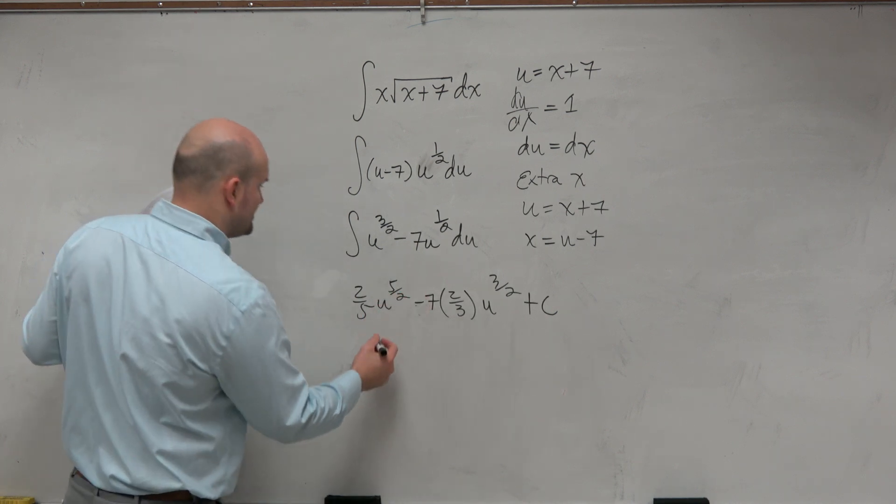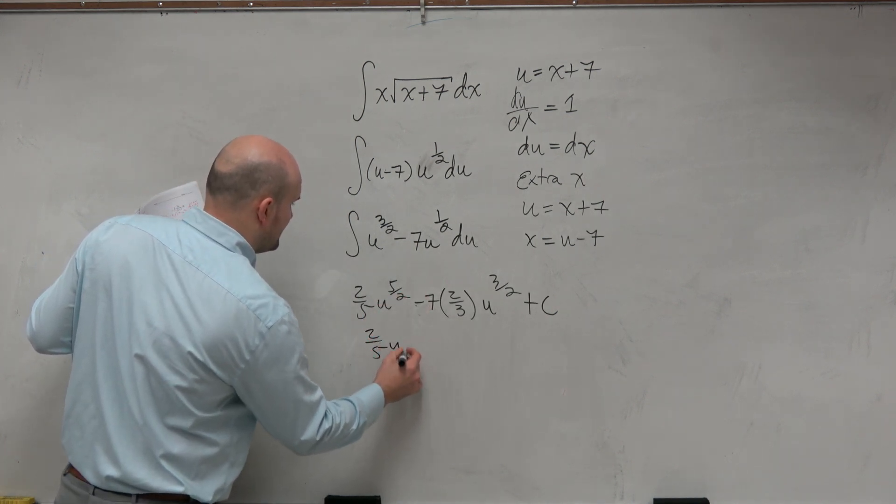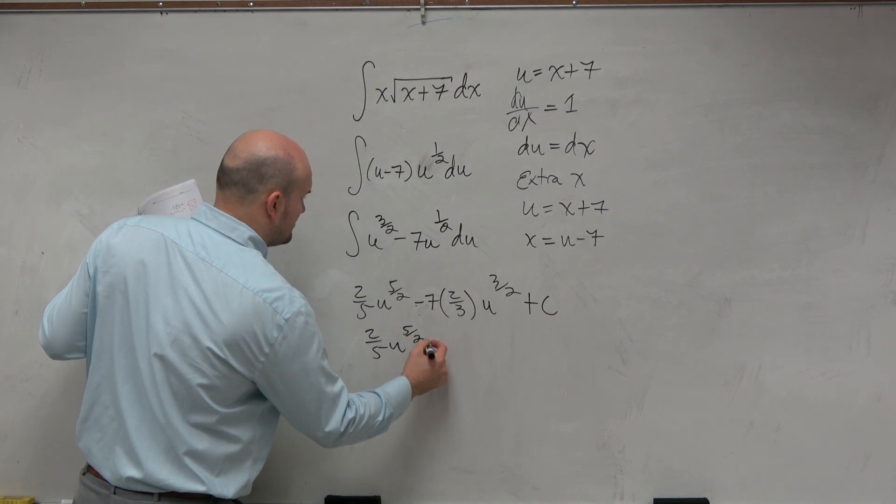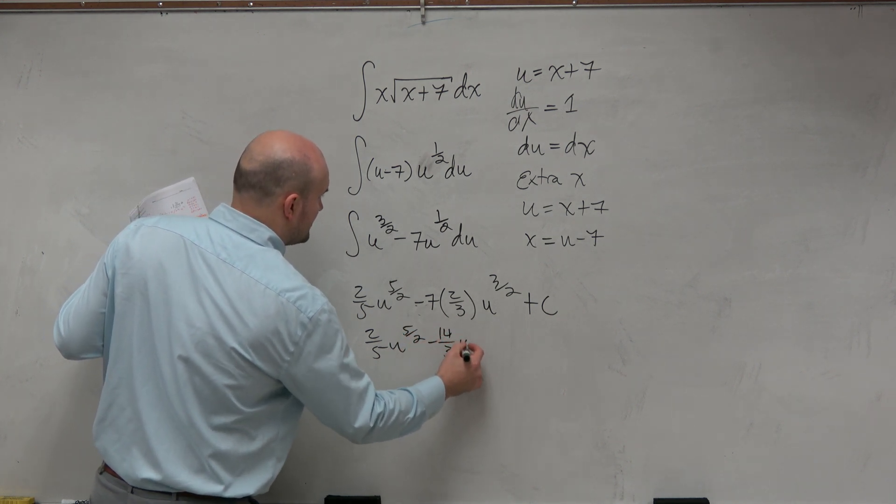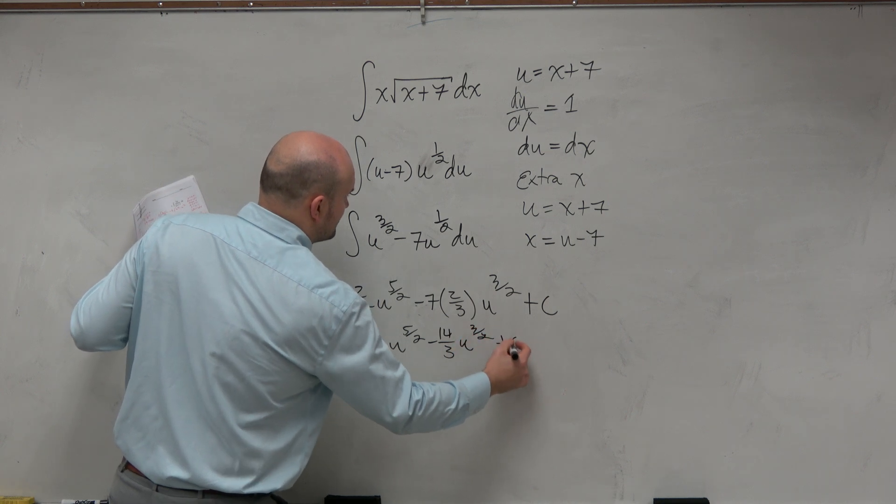All right, and then basically we could just go ahead and simplify this. 2 fifths u to the 5 halves minus 14 over 3 u to the 3 halves plus C.